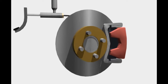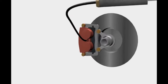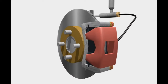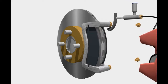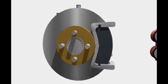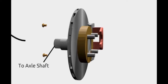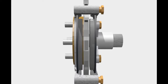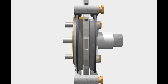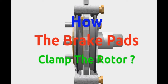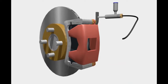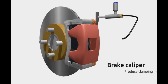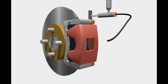Disc brakes use the clamping method for braking. The brake system works because of friction. In the disc brake system, friction occurs when the brake pads clamp a rotating rotor. The rotor is connected to the axle shaft so that it rotates with the wheel. The brake pads are able to hold the rotor — but how? Through another component: the brake caliper, a brake actuator that produces clamping movements.